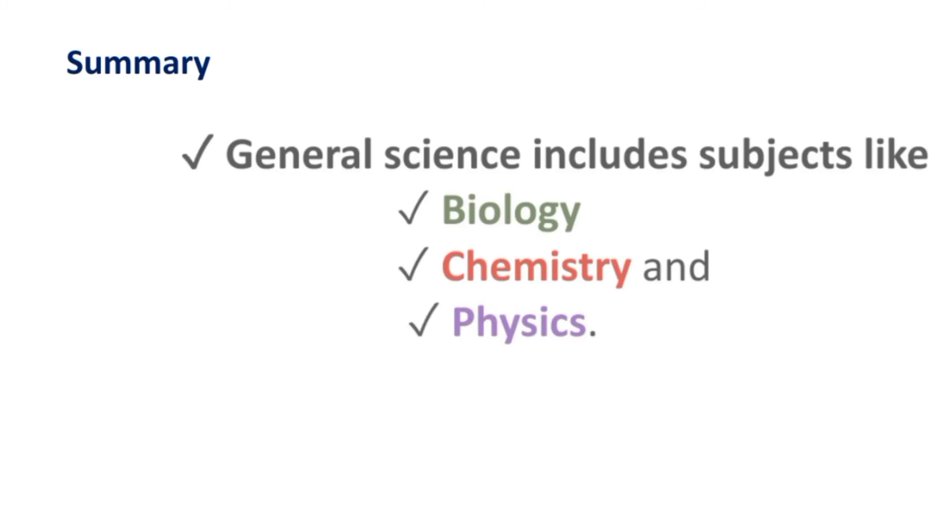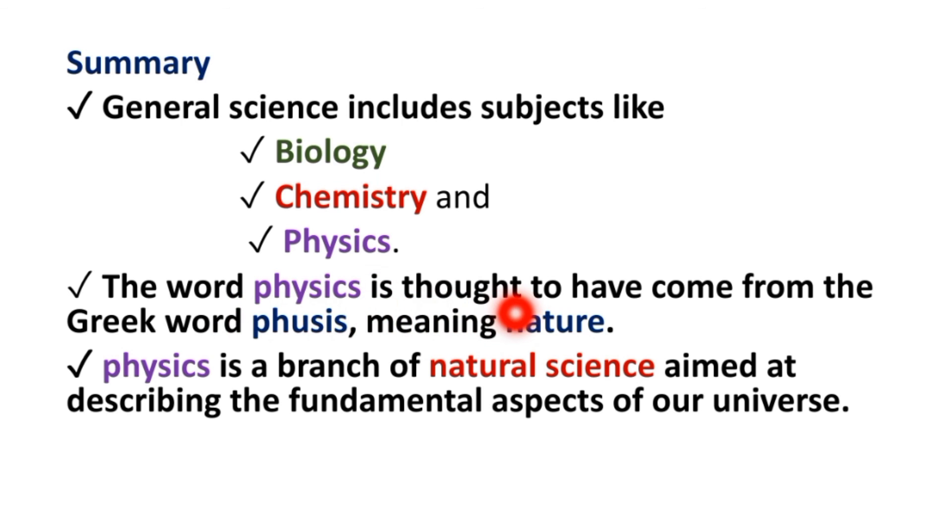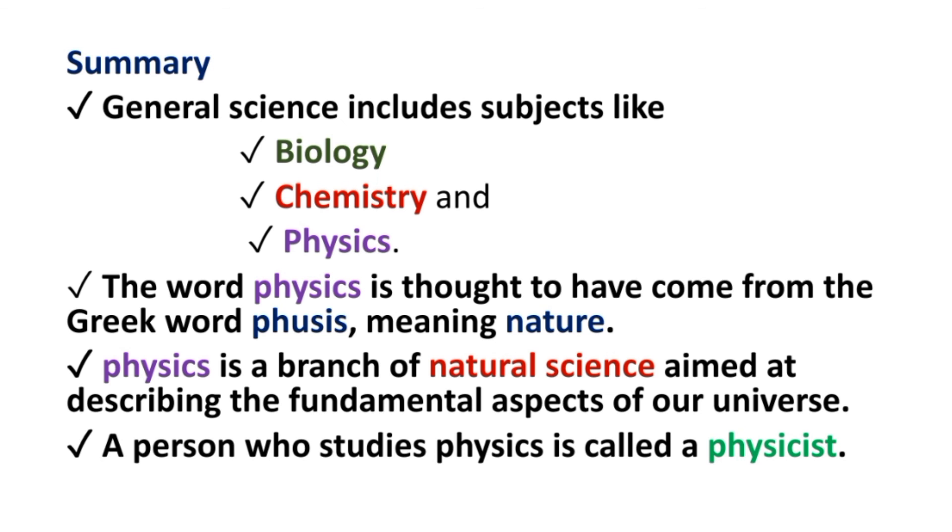Summary. General science includes subjects like biology, chemistry, and physics. The word physics is thought to have come from the Greek word phusis, meaning nature. Physics is a branch of natural science aimed at describing the fundamental aspects of our universe. A person who studies physics is called a physicist.